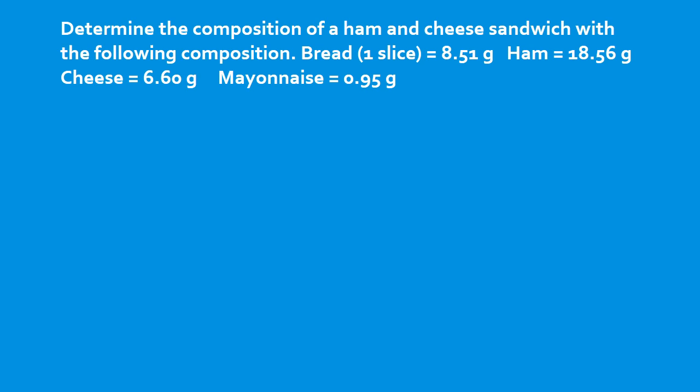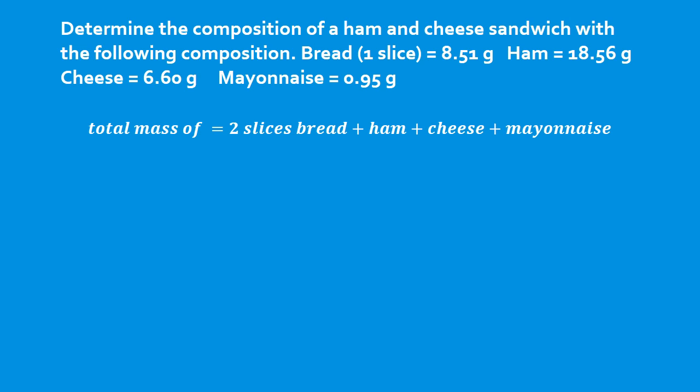Here we're asked to determine the percent composition of a ham and cheese sandwich with the following composition. We're given the mass of bread, the mass of ham, the mass of cheese, and the mass of mayonnaise. Since we need the composition, we need to define the percent composition of each component. First, we need to know the total mass.